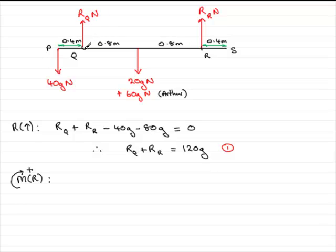It's going to want to turn the bench about R in a clockwise direction. So it's going to be a positive moment, and moment is the force times the perpendicular distance to the point that we're turning about. So it'll be RQ multiplied by this distance here, which is going to be 1.6 metres. So we'll just put 1.6 in.